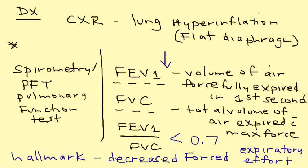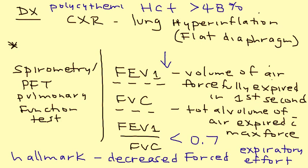One more lab finding to mention: in COPD, the hematocrit can be very high — sometimes as high as 50 — which is known as polycythemia. This sometimes appears on clinical vignettes.